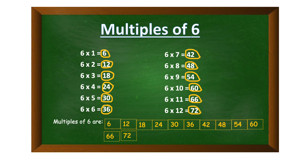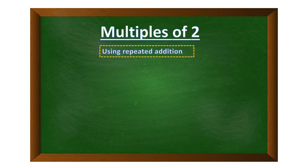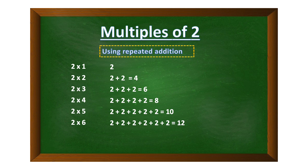We can also use repeated addition to find multiples of a number. Let's find multiples of two using this method. We start with two and keep adding two to each result — we can also call this skip counting. Two plus two is four.